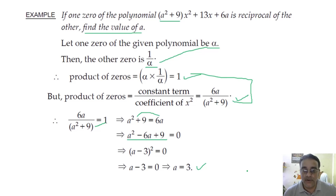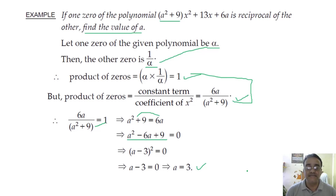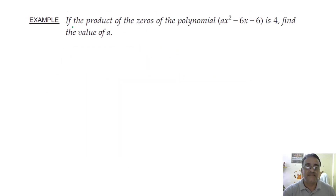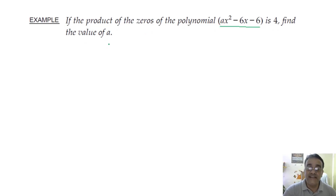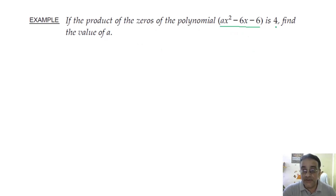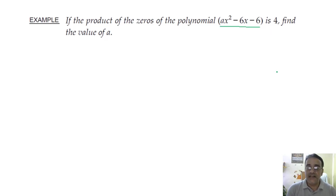This is a board exam question and is very important for standard exams. One more question: if the product of zeros of the polynomial ax² − 6x − 6 is 4, find the value of a.